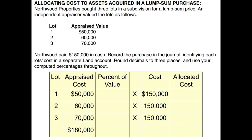They got an independent appraiser to come in and appraise each item. The first lot was appraised at $50,000, the second lot at $60,000, and the third lot at $70,000. Northwood paid $150,000 for all of this together. We need to record the purchase in the journal identifying each lot's cost in a separate land account, rounding decimals to three places and using computed percentages throughout. When we add up the appraised cost of each item we get a total of $180,000, but we only paid $150,000.